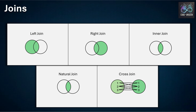In SQL, joins are used to combine rows from two or more tables based on related columns. There are different types of joins like left join, right join, inner join, cross join, etc., each serving a unique purpose. Let's go through them one by one.